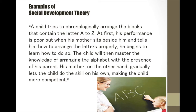Let's talk about this situation. A child tries to chronologically arrange blocks that contain the letters A to Z. At first, his performance is poor, but when his mother sits beside him and tells him how to arrange the letters properly, he begins to learn how to do so. The child will then master the knowledge of arranging the alphabet with the presence of his parent. His mother gradually lets the child do the skill on his own, making the child more competent. This is an example of social development theory, where Vygotsky primarily explains that socialization affects the learning process in an individual.